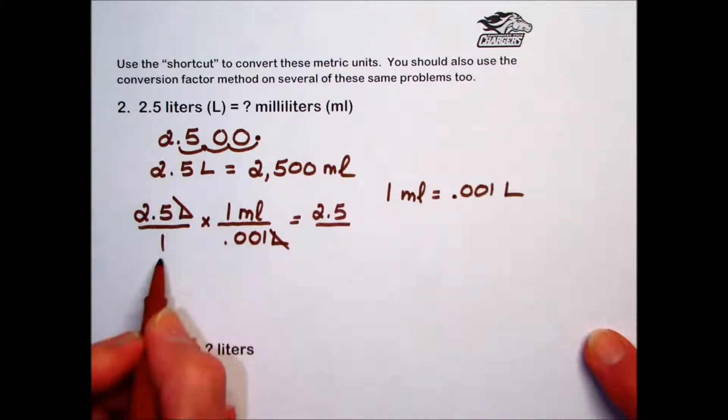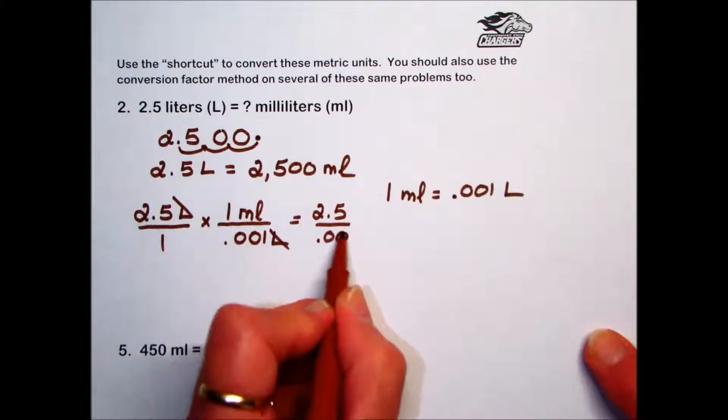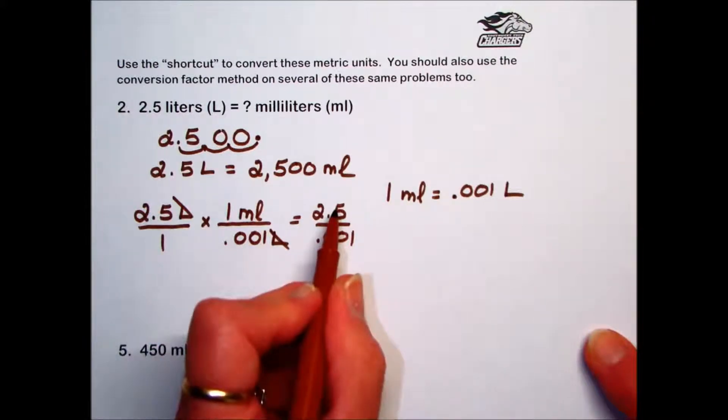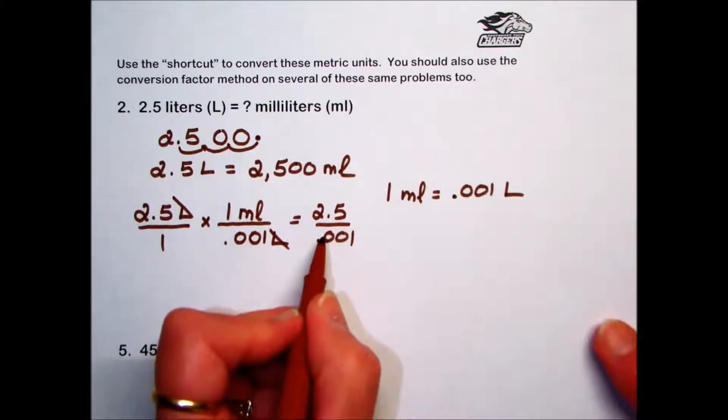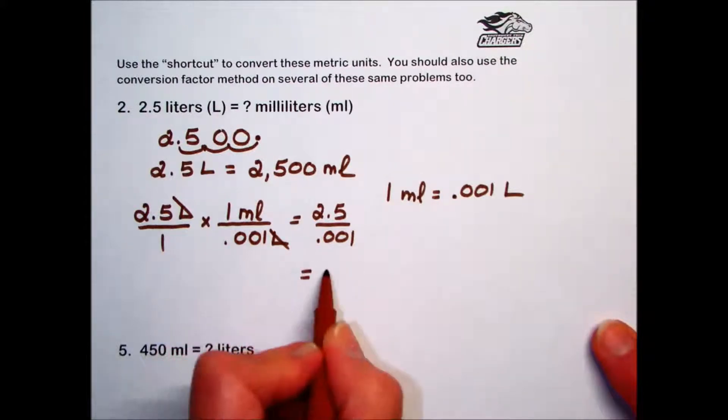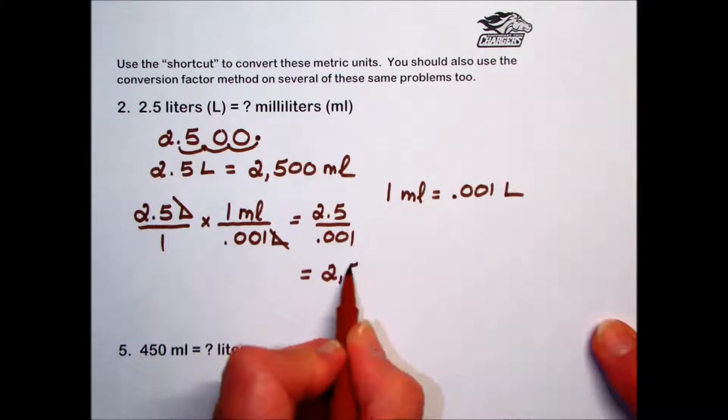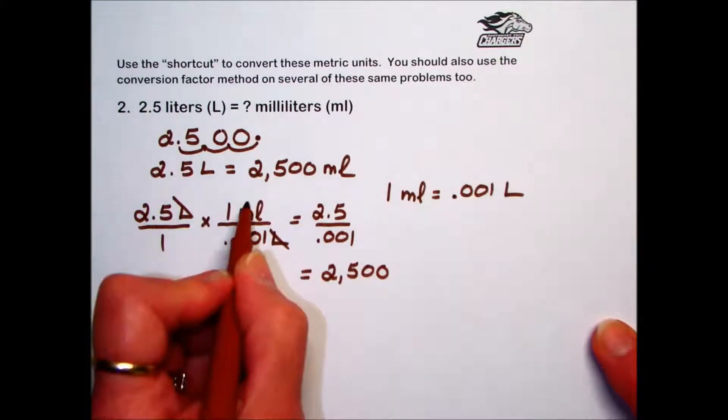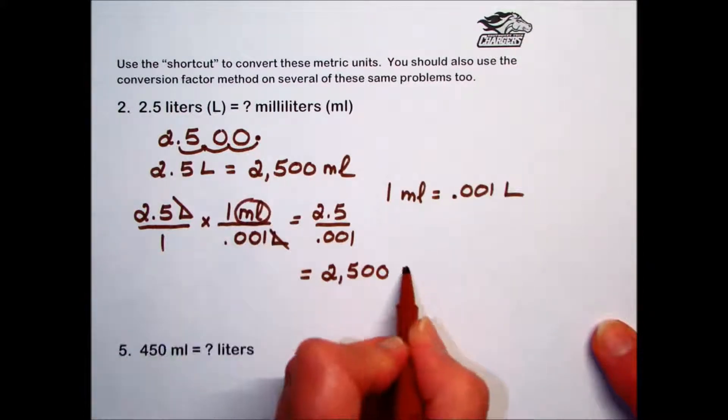In the denominator, we have 1 times 0.001. Do the indicated division, 2.5 divided by 0.001, gives us a value of 2,500, and the units are milliliters.